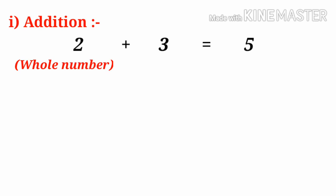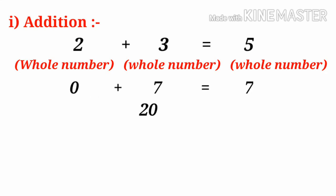First, take Operation Addition. Let us take 2 and 3. 2 plus 3 equals 5, where 2 is a Whole Number, 3 is a Whole Number, and the sum 5 is also a Whole Number. In the same way, 0 plus 7 equals 7, and 20 plus 51 equals 71.